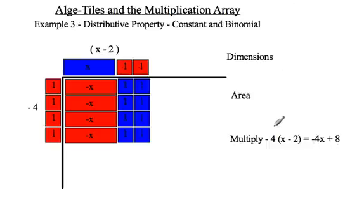I would like to point out one more time, though, I have this shortcut building. Negative 4 times x, negative 4x, negative 4 times negative 2, positive 8. Looks like it's still holding true.